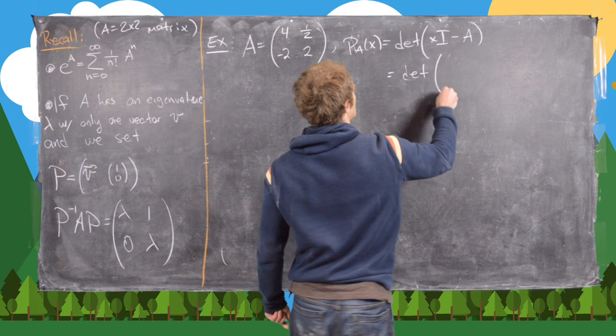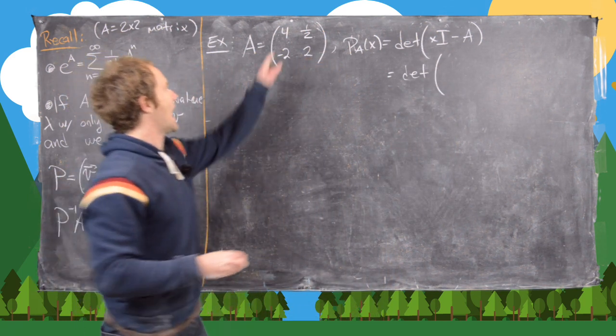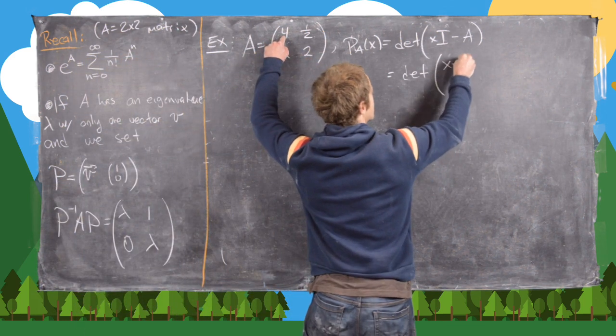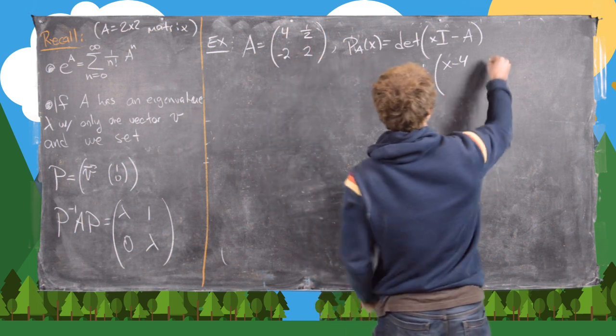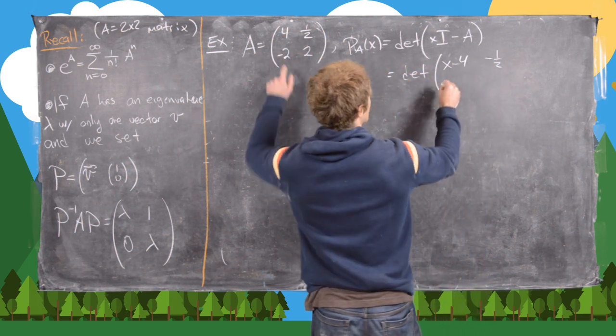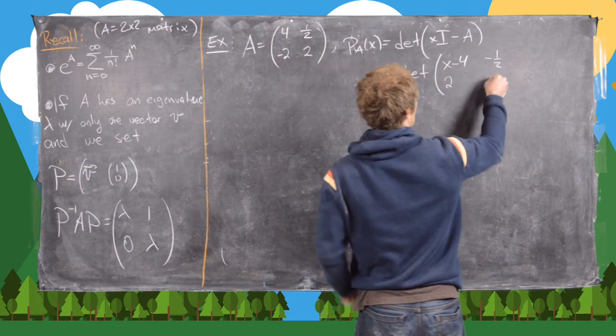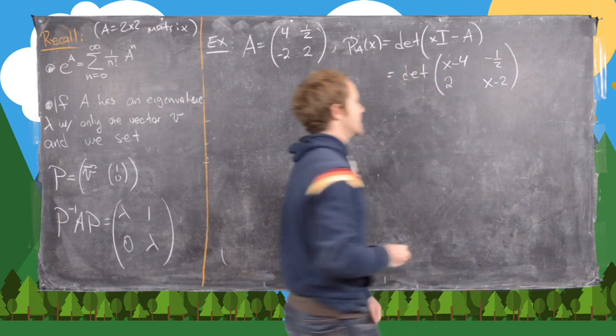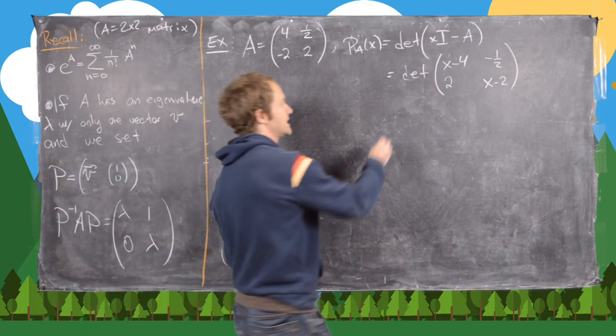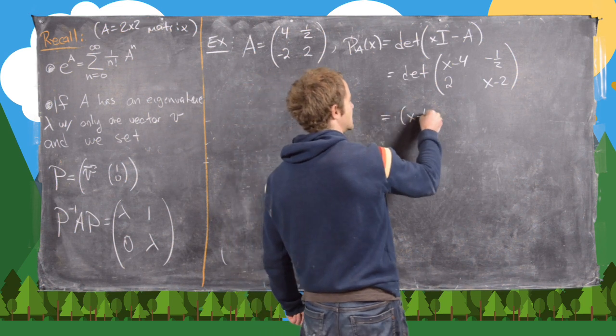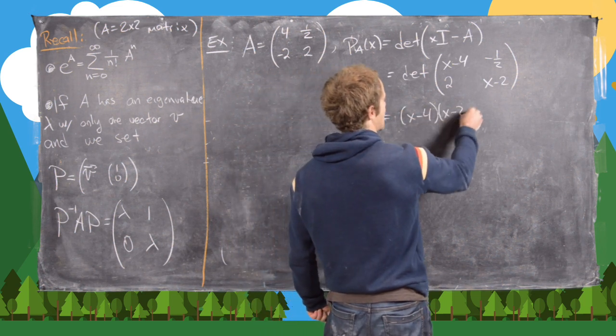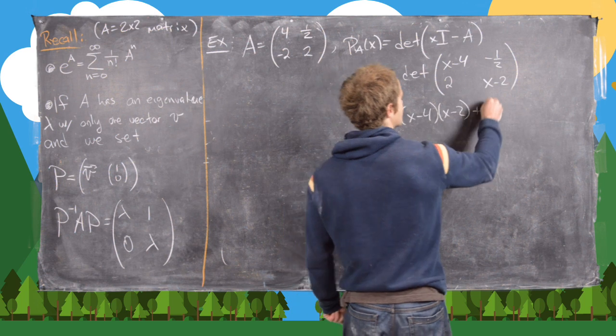So notice that's going to be the determinant of x times I minus A. So let's see what we get for that. We get the determinant of [x-4, -1/2; 2, x-2]. Okay, now we can take that determinant. We get (x-4) times (x-2), and then we get plus 1.